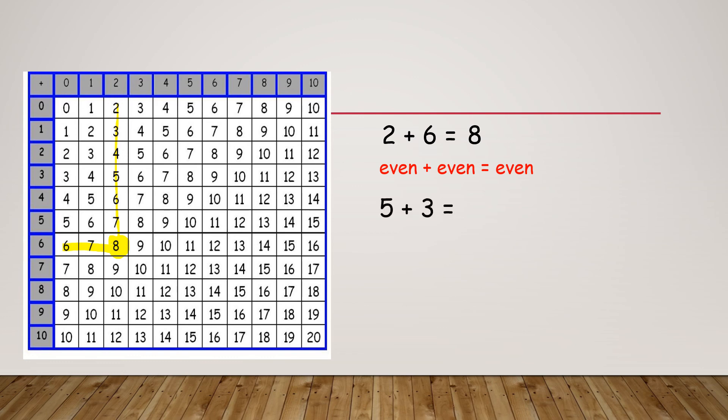Now 5 plus 3. 5 plus 3. 5 is an odd number and 3 is an odd number. So 5 plus 3 equals 8. So we have odd plus odd equals an even number.